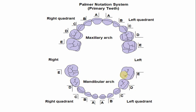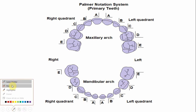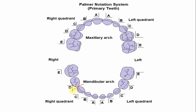In the Palmar Notation System, the alphabets start from the midline, similarly to the maxillary arch. The alphabet for the canines is C. The only difference is the quadrant symbol: one symbol indicates the tooth is in the mandibular arch of the left quadrant, giving C for the left side, and another symbol indicates the right mandibular quadrant, also giving C.